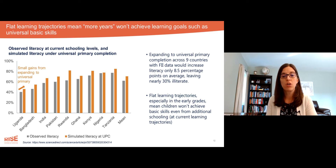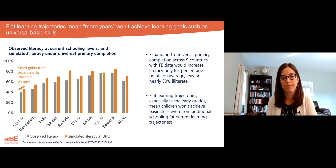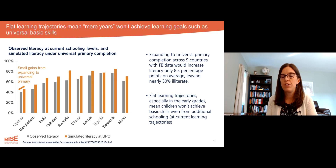The gray bars represent current literacy levels in each country, and the orange bars represent literacy levels if all young adults had completed primary school. The study found that expanding to universal primary completion across the nine countries would increase literacy by only 8.5 percentage points on average, leaving nearly 30% illiterate.